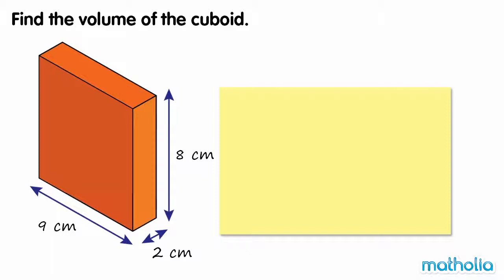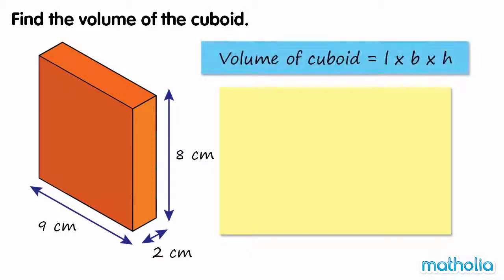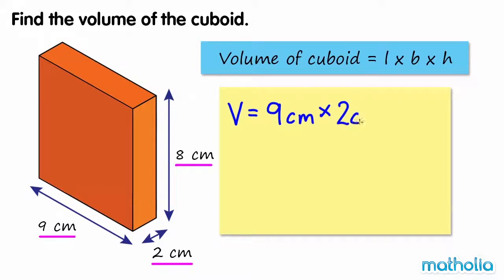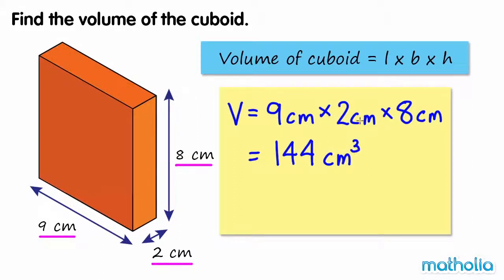Find the volume of the cuboid. The volume of a cuboid is given by length times breadth times height. This cuboid has a length of 9 cm, a breadth of 2 cm, and a height of 8 cm. 9 times 2 times 8 equals 144. So the volume of the cuboid is 144 cm³.